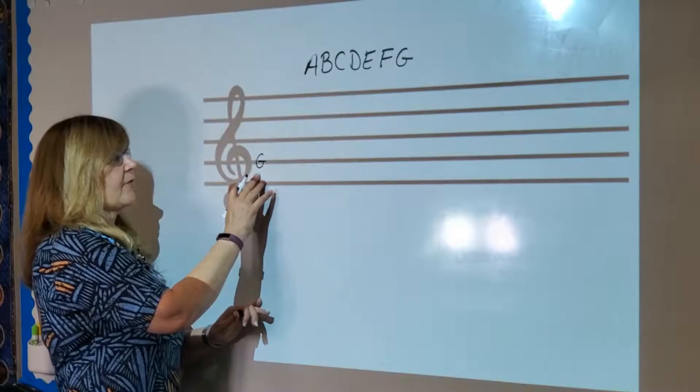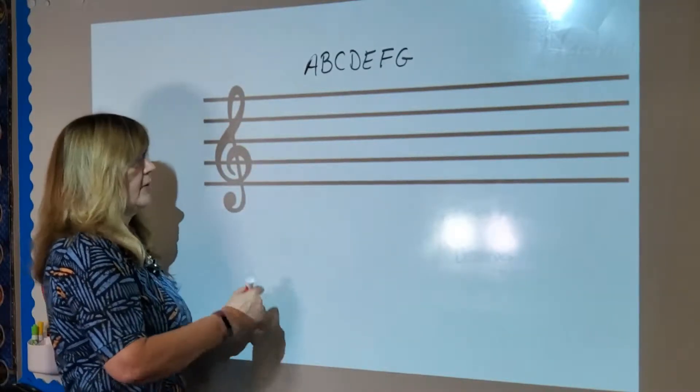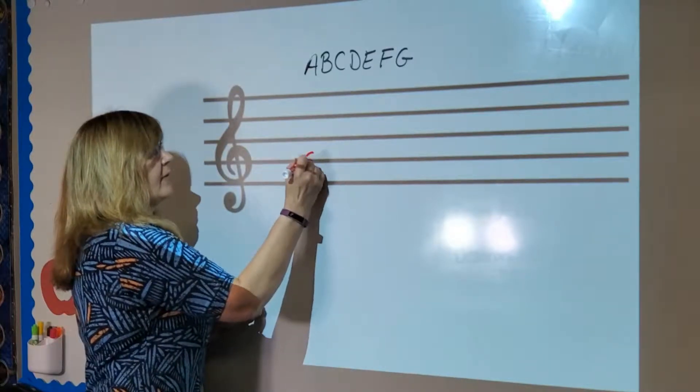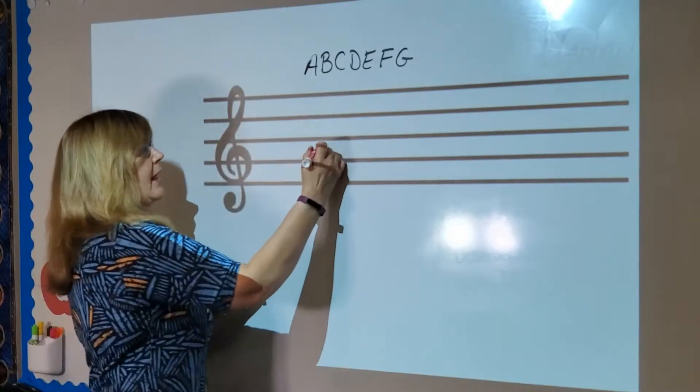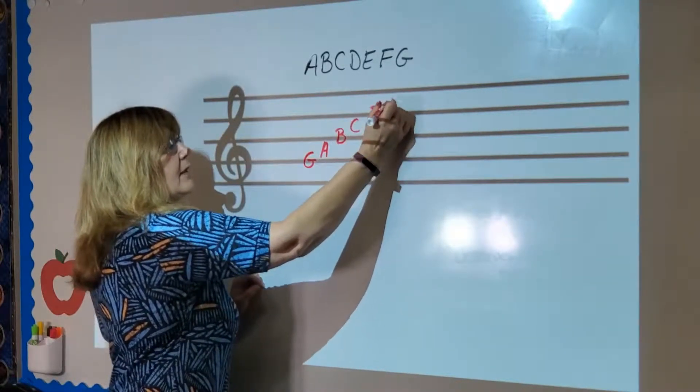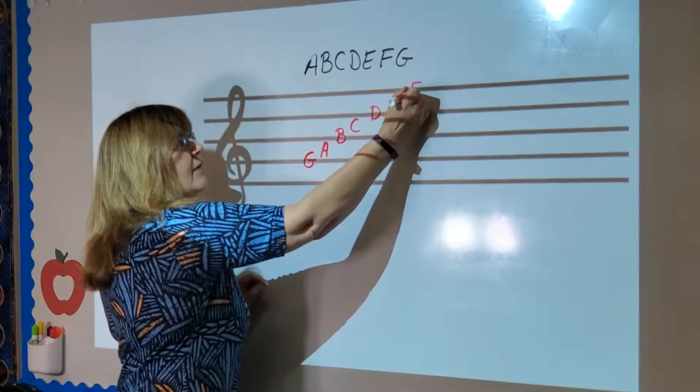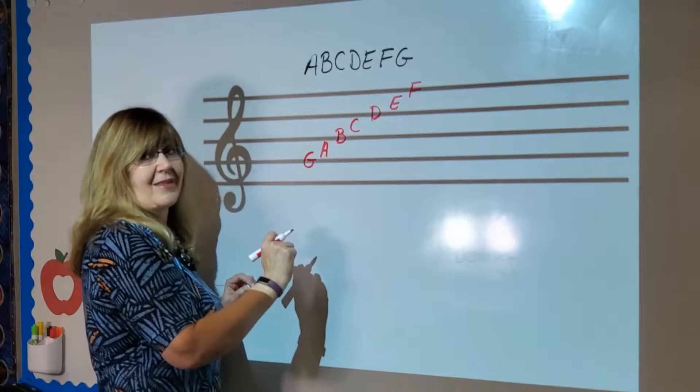So for us to figure out this G we're going to switch to red so you can see it better. So here we have the G line and then if we go up we're going to have to go back to A then B then C then D then E and last F. We could go farther up for today's purposes we're going to stop at the F.